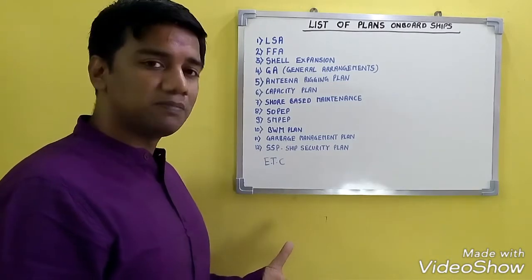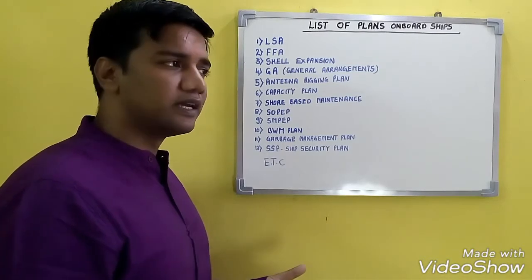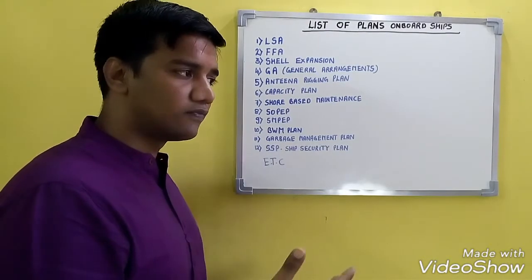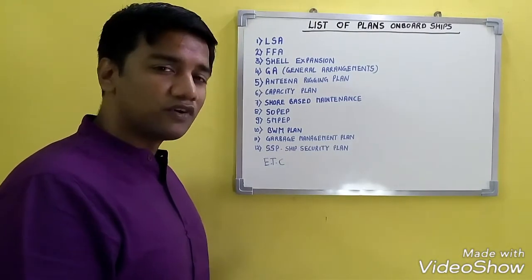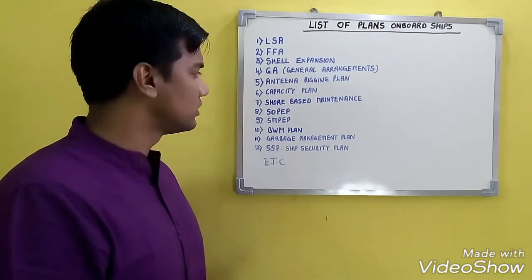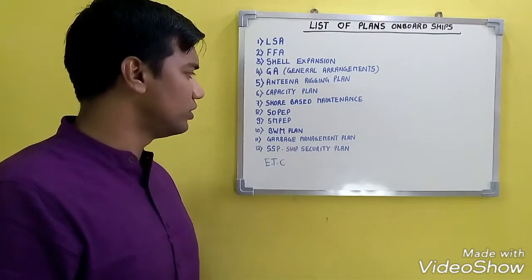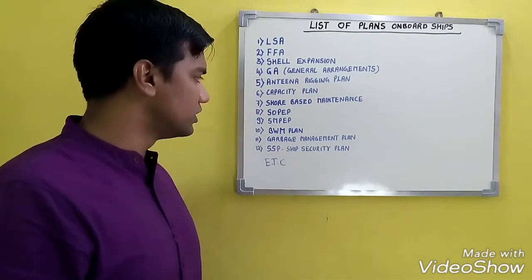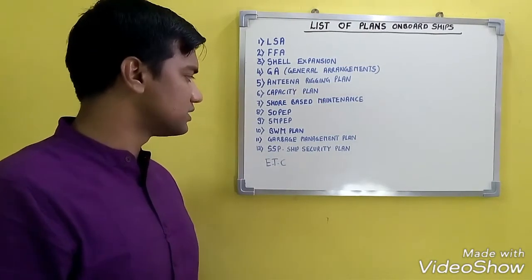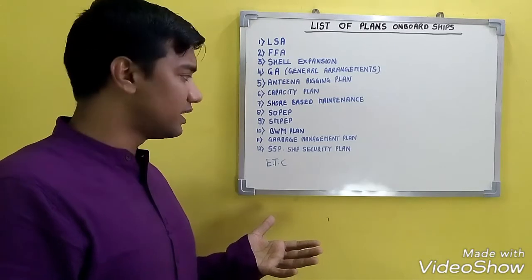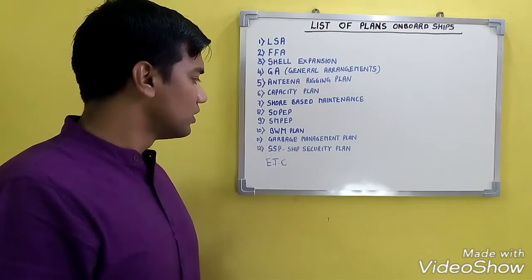The general arrangements plan gives an overview of the ship layout. The antenna rigging plan provides information regarding the antenna position of each antenna for various equipment. The capacity plan covers the capacity of your tanks and cargo holds. The shore-based maintenance plan covers various equipment on board. The ship oil pollution emergency plan and the ship marine pollution emergency plan cover chemicals and liquid substances.